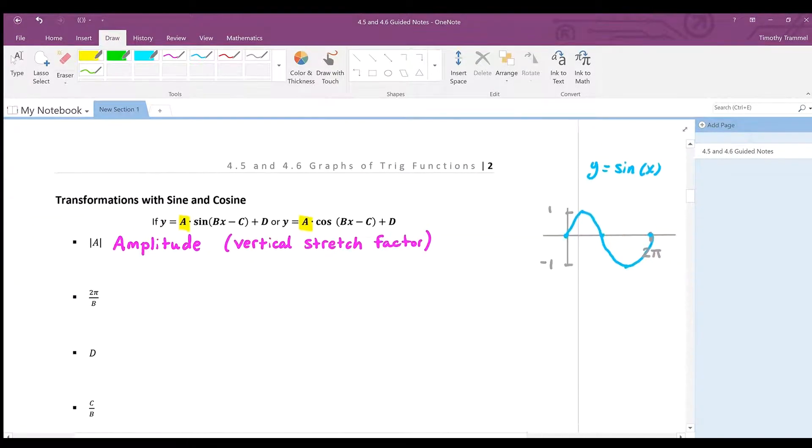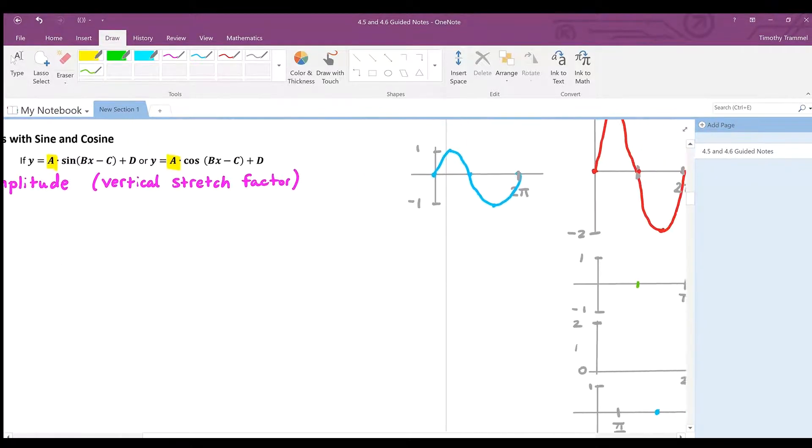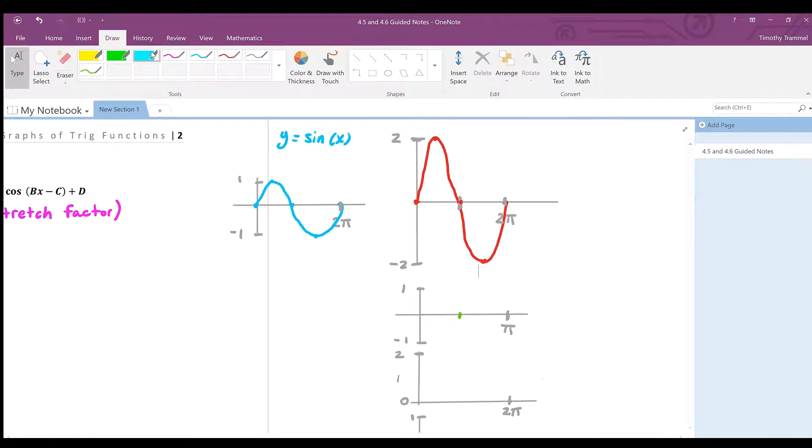All right. Let's look at our next transformation. 2 pi over b. What is this? What is 2 pi over b? Well, it ends up that, well, actually, I'm not going to tell you what it is yet. Let's find out. Let's go over here and we'll graph y equals sine of 2x.